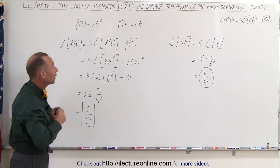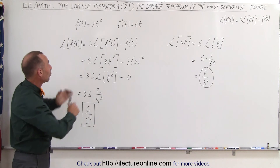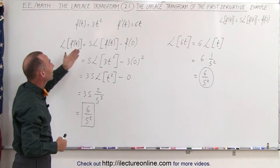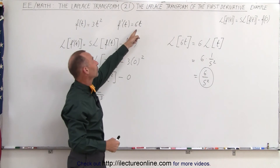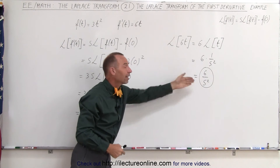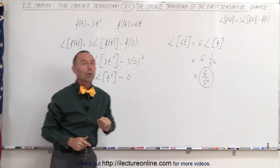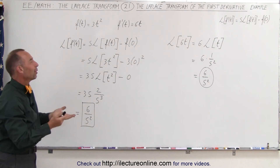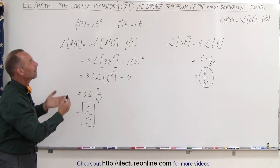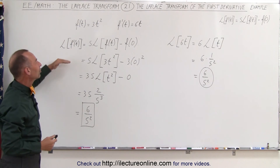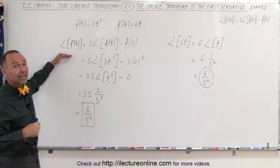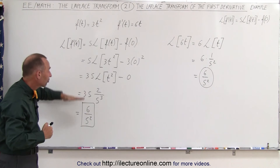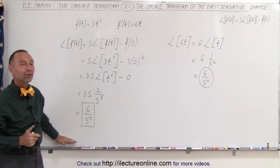You may want to ask: why did I go through all that trouble when I could have simply taken the Laplace transform of 6t and gotten the answer very quickly? Well, that's not really the point. The point is to show that the original equation for taking the Laplace transform of a first derivative actually does give you the right answer.